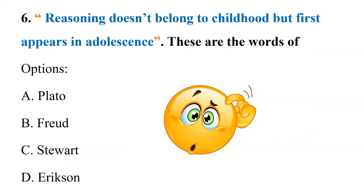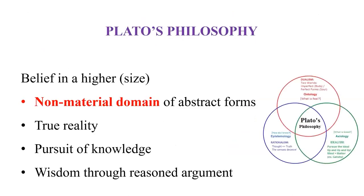Question six: 'Reasoning does not belong to childhood but first appears in adolescence.' The given options are: A) Plato, B) Freud, C) Stuart, D) Erikson. Let's understand the philosophies of all given options.